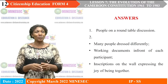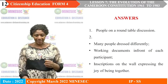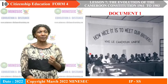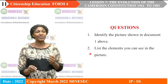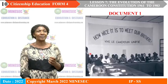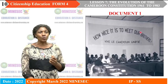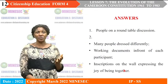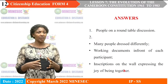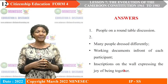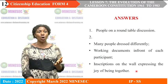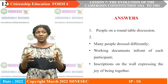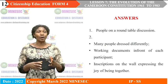The answer: this picture shows people on a round table discussion. For Question 2, listing the elements we can see: many people dressed in different attire, working documents in front of each participant, and an inscription on the wall expressing the joy of being together. These are the features we can identify on this picture.